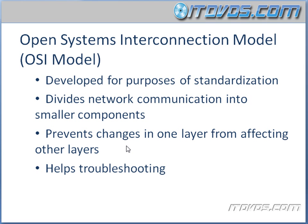The OSI model also prevented changes from one layer from affecting other layers. For example, we may have a policy in IT that we change, but it doesn't necessarily affect the accounting department. And vice versa, the accounting department may make a policy change within their department, but it doesn't affect IT. In networking, we can make a change to a protocol and, as long as it adheres to certain standards, it doesn't affect other protocols.